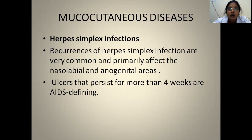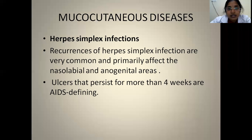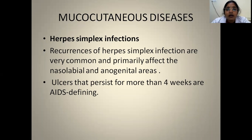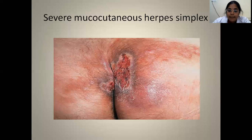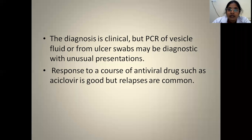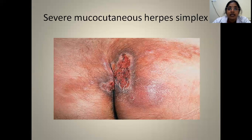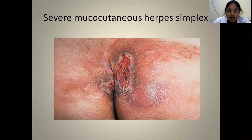Herpes simplex infections: once counts drop below 200, patients present with recurrent episodes. They present with ulcers or fluid-filled vesicles over the nasolabial folds and inner genital areas. These vesicles rupture to form ulcers that heal but recurrence is very common. If ulcers persist for more than one month, this is an AIDS-defining condition. Diagnosis is usually clinical but PCR can be done from vesicle fluid or ulcer swabs. They respond well to antivirals — acyclovir. This image shows severe mucocutaneous herpes simplex ulcers over the buttock region in an AIDS patient.